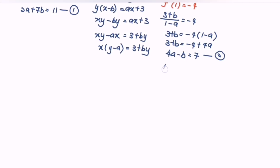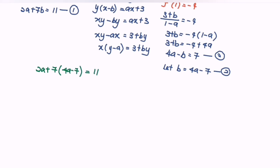Let b = 4a - 7, then substitute into the first equation: 2a + 7b = 11, so 2a + 7(4a - 7) = 11. Expand and simplify: 2a + 28a - 49 = 11, so 30a = 60, therefore a = 2.